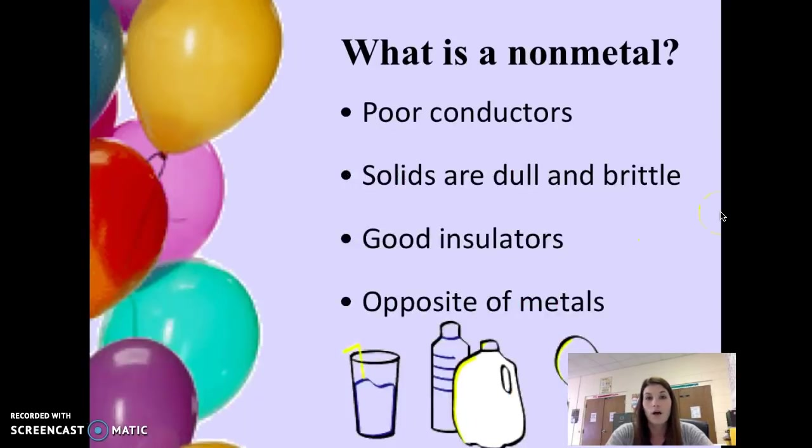So first of all, what is a nonmetal? Some basic characteristics of nonmetals. First of all, they are the complete opposites of metals. So they are poor conductors. If they're found in the solid state, which a lot of them are gases, but the ones that are solids are dull and brittle. So dull being the opposite of shiny, and then brittle meaning that they break really easily.